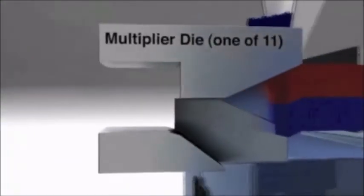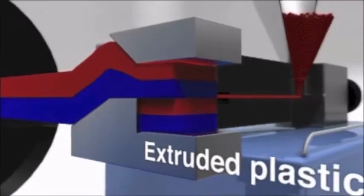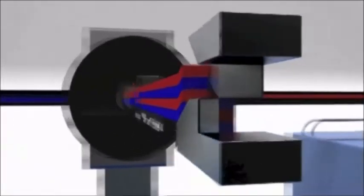The heart of the co-extrusion process is the layer multiplication stage. The bi-layer flow enters a series of multiplier dies, which split the flow vertically, then recombine the two flows, resulting in a doubling of the number of layers.